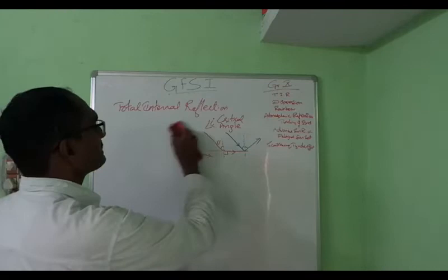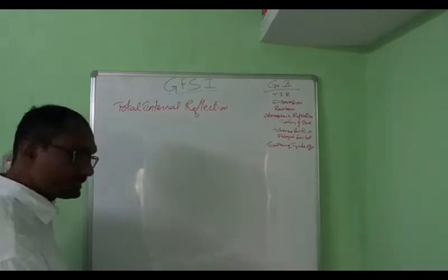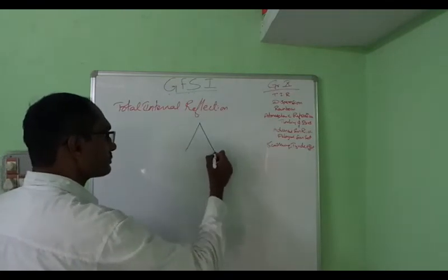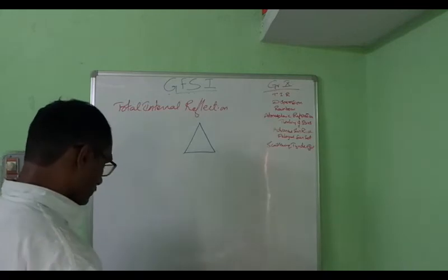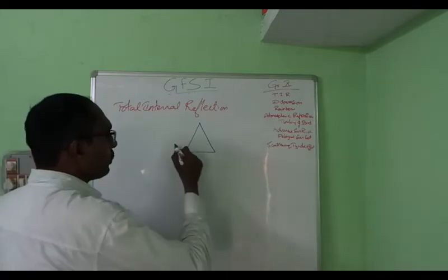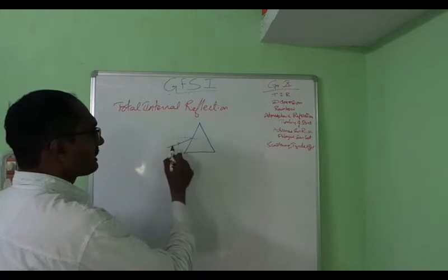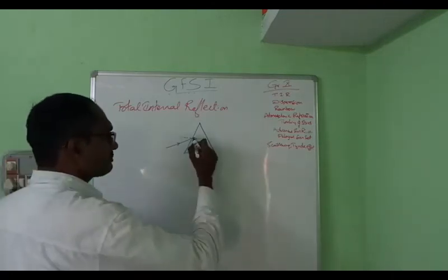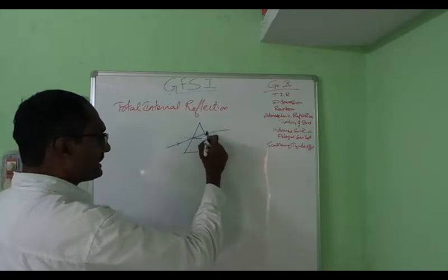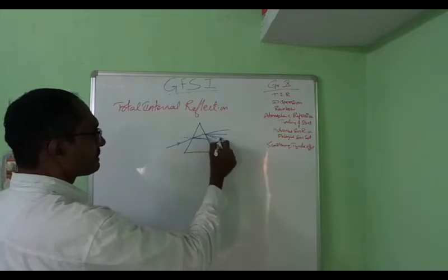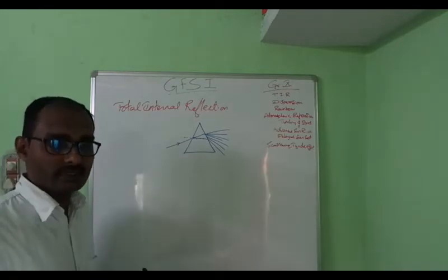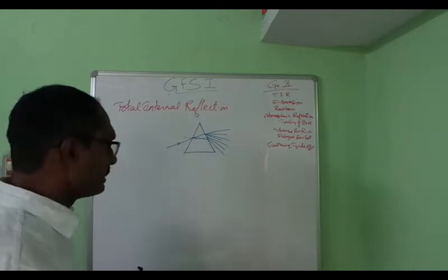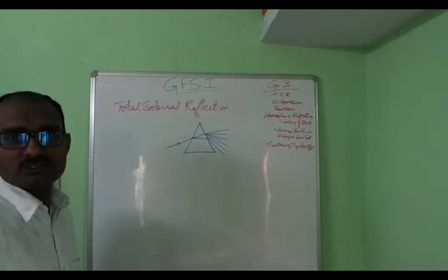Now coming to the second part, that is dispersion. We have a common experience to see that when a light ray is made to pass through a prism, it splits. This white color light ray, when it enters into the glass from air, splits into seven different colors. This splitting of white light into seven different colors is called dispersion. Dispersion of light is nothing but the splitting of white light into all its constituent seven different colors. This dispersion is observed very clearly in a prism.